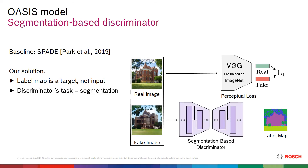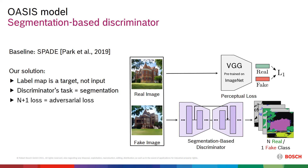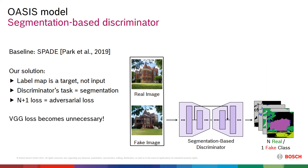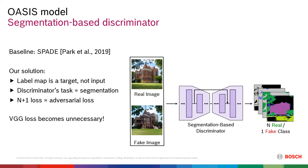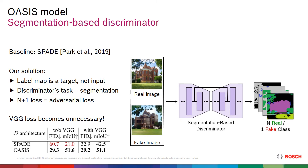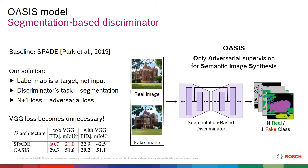So we cast the discriminator task as semantic image segmentation, correspondingly altering its architecture to an encoder-decoder structure. Thus, the discriminator plays an adversarial game, trying to predict one of N semantic classes for each pixel of a real image, while a fake image is categorized as an additional fake class. Such a segmentation-based discriminator provides a richer training signal to the generator, so the perceptual loss becomes unnecessary. The effect of the proposed discriminator is a notable performance gain, even without the VGG loss.